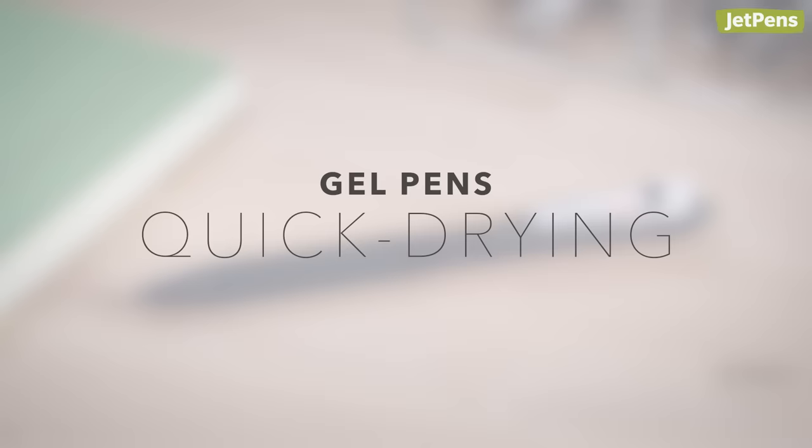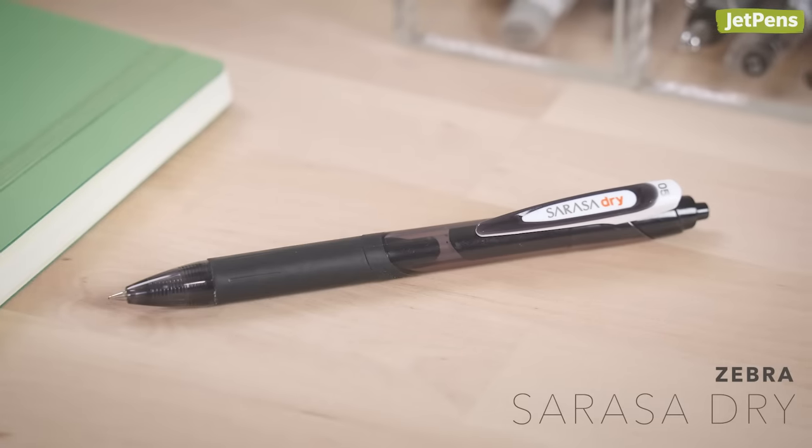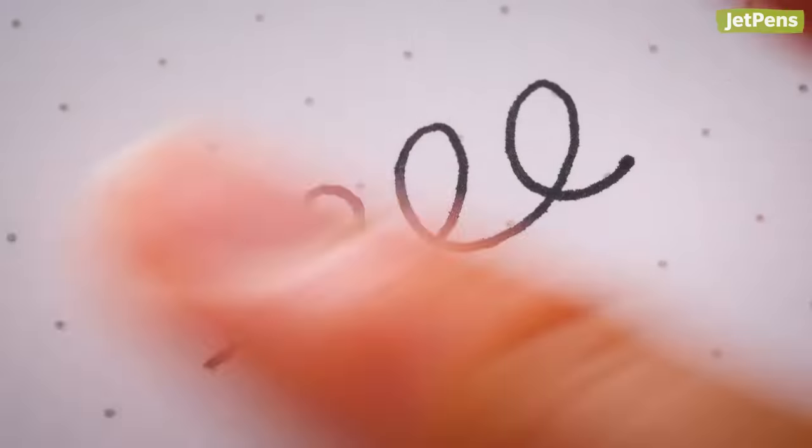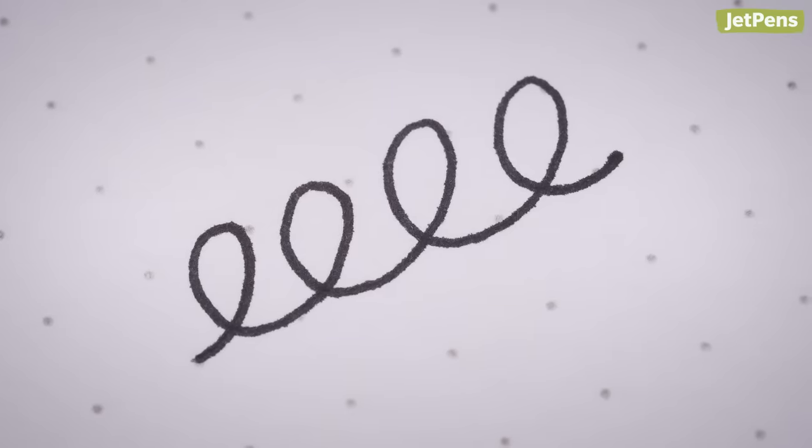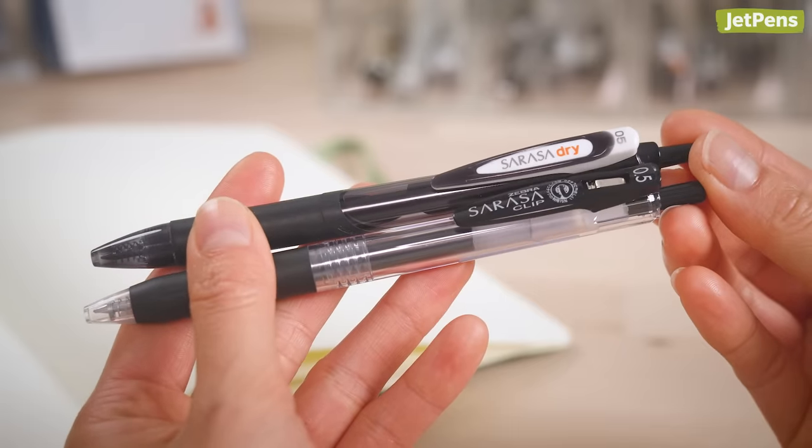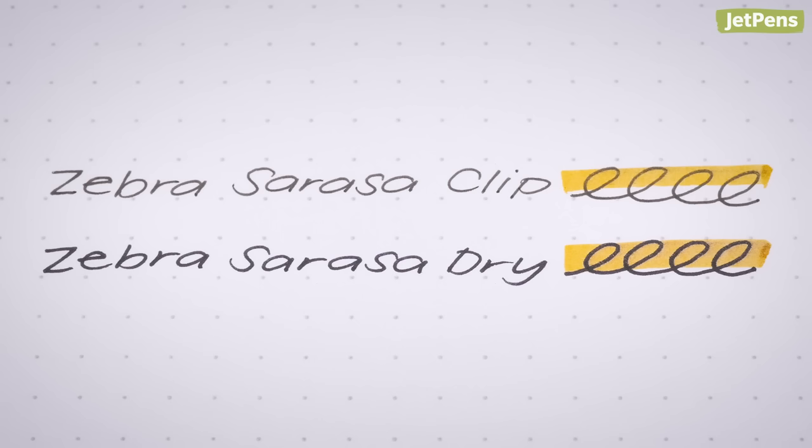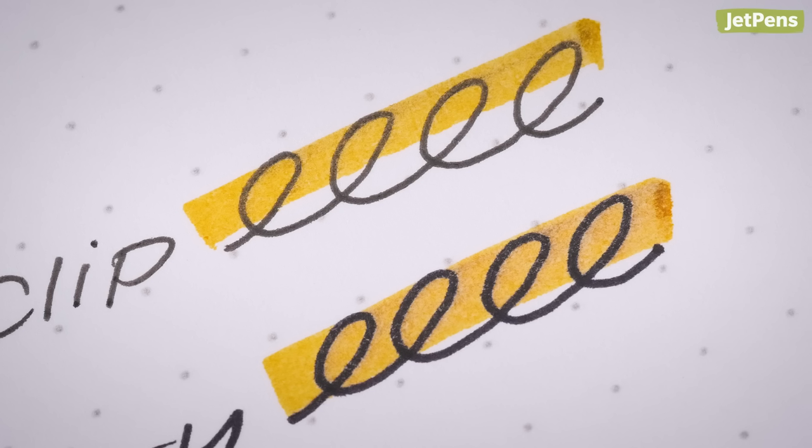Quick Drying. Fast writers and left-handers alike will appreciate the Zebra Sarasa Dry. Its ink dries 85% faster than conventional inks, so you can swipe your finger over sentences almost immediately. Just like other Sarasa pens, the Dry uses a smooth, dark, and vivid ink. However, it's not water-resistant, so it's best to pair highlighters with a different writing instrument.